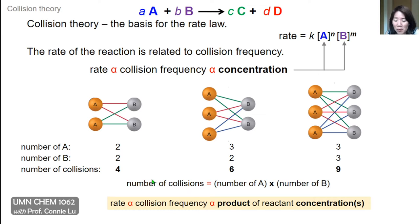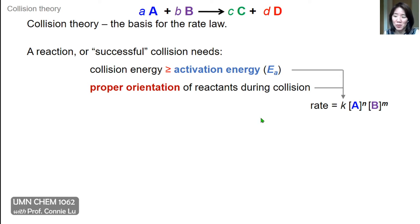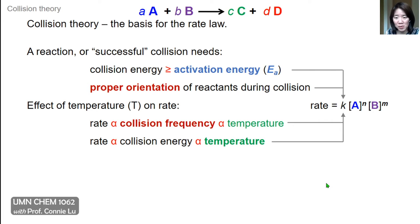The next part — showing where collision theory forms the basis of the rate law equation — is more complex. We have an energy requirement for a successful collision, but that's not shown yet in the rate law. Also, how is proper orientation accounted for? Both of these facets, along with temperature, are actually contained in the seemingly simple rate constant K. The only parameter in the rate law equation that actually varies with temperature is the rate constant K.